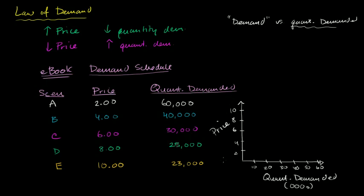So scenario A, price is $2, 60,000 units are demanded. That is scenario A right over there. Scenario B, when the price is $4, 40,000 units are demanded. $4, 40,000 units, that's right over there. That's scenario B.